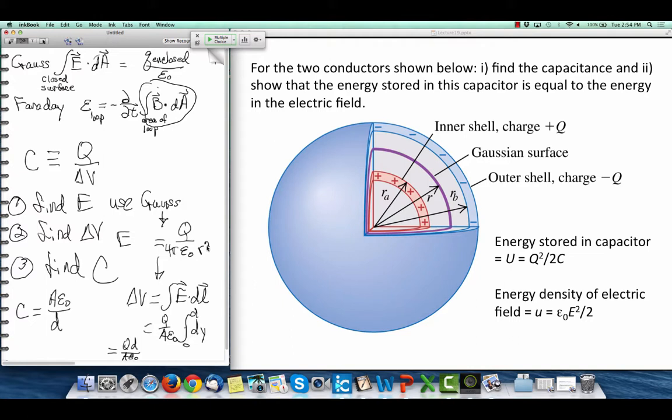The electric field in between this. So, in between rA and rB is that constant radial electric field, drops off as 1 over r squared.